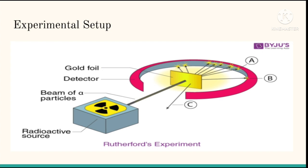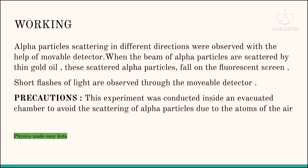A circular screen coated with zinc sulfide was kept in such a way that it received the beam of alpha particles after passing through the thin gold foil. Alpha particles scattering in different directions were observed with the help of a movable detector.